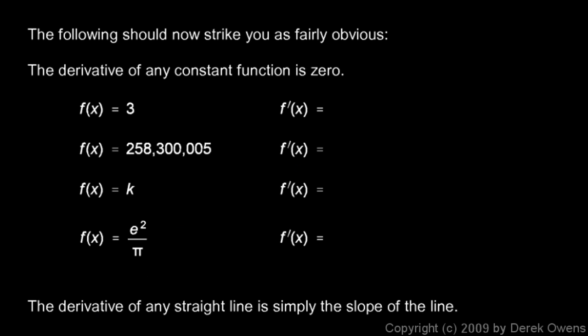Now, with those concepts in mind, the following should strike you as fairly obvious. The derivative of any constant function is going to be 0.